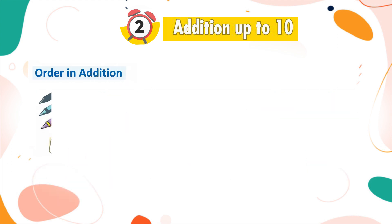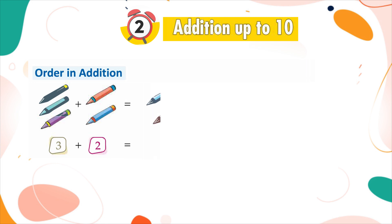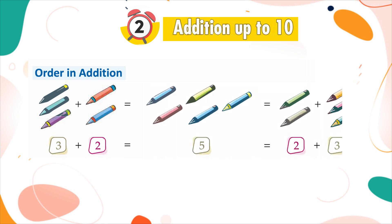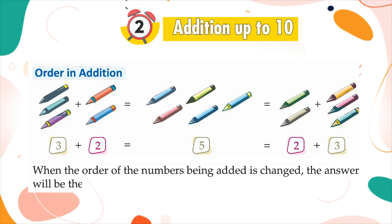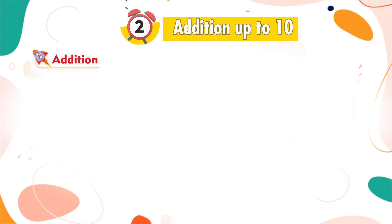Order in addition: 3 plus 2 is equal to 5, which is equal to 2 plus 3. When the order of the numbers being added is changed, the answer will be the same.